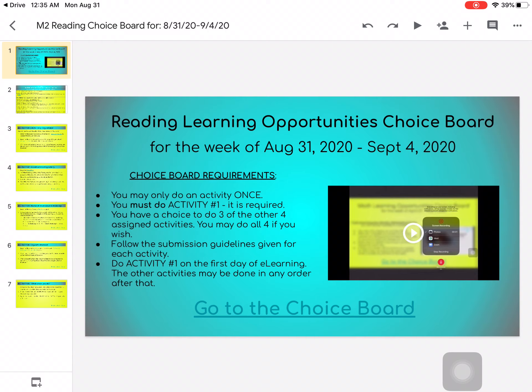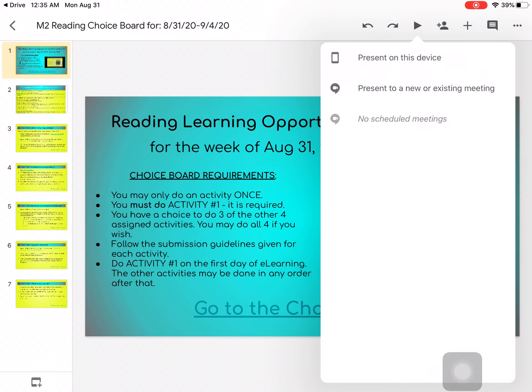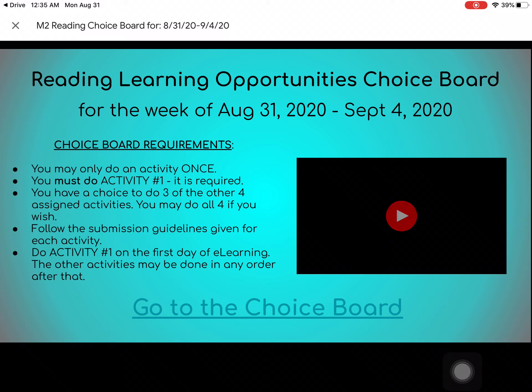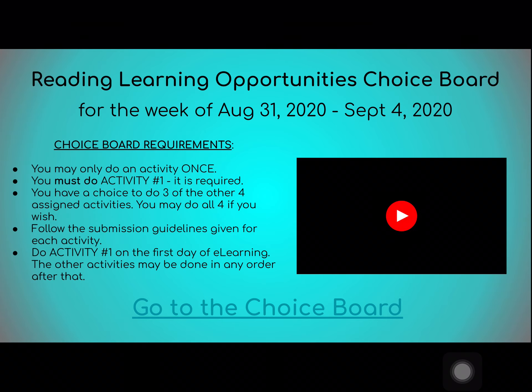We will start the presentation when you come into this video — it will look like this. You'll notice you have five bullet points on the left that you need to pay attention to. One: out of the five activities that are presented, you may only do an activity once. Two: you must do activity one. It is required.